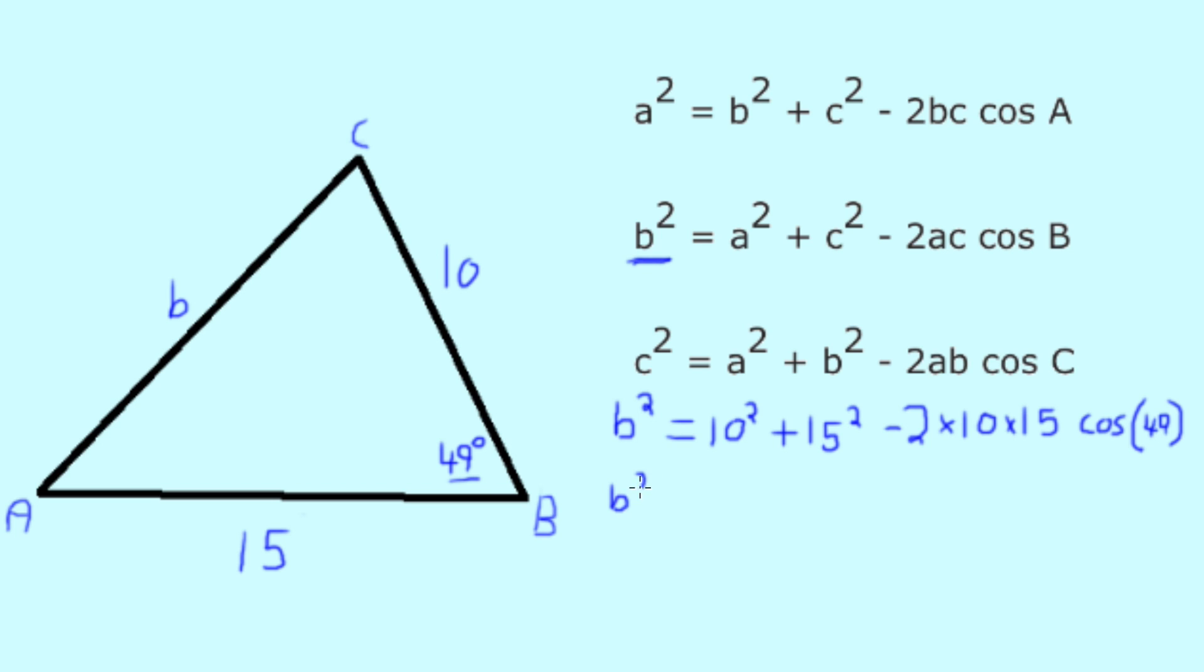So below, we write b squared equals 100, as this is 10 squared, plus 225, as this is our c squared, minus 196.8177, which is our answer for 2 times 10 times 15 times cosine 49. It's good practice of any maths question to keep a set amount of decimal places for the entire process, so here we'll stick to 4 decimal places for the whole example.